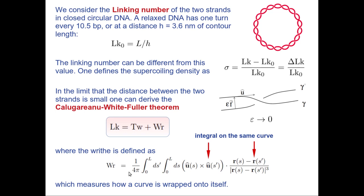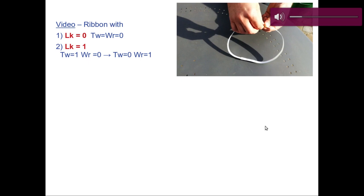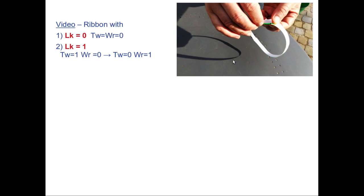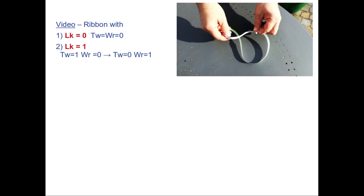Here is an example with a video where I take a piece of ribbon and study first the case LK equal to zero, then the case LK equal to one, obtained by turning it. You see I can have LK equal to one in two states: either twist equals one and writhe equals zero, or the last configuration where twist is transformed to zero and writhe equals one.